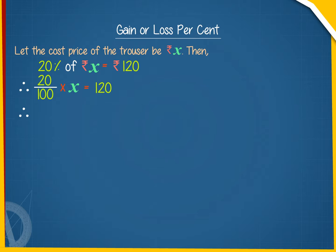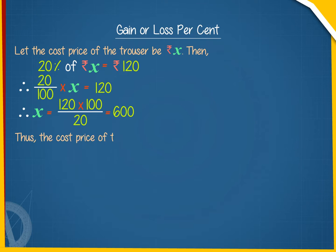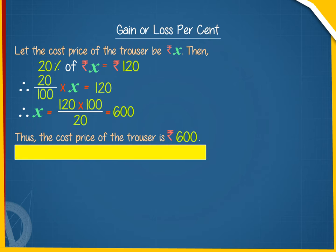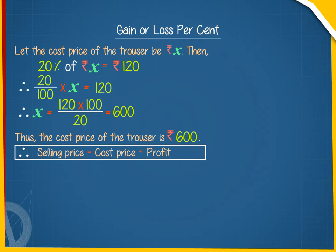Therefore x equals 120 into 100 divided by 20, which equals 600. Thus the cost price of the trouser is rupees 600. Therefore, selling price equals cost price plus profit, equals rupees 600 plus 120.